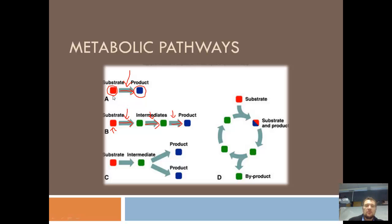Pathways can be simple linear metabolic pathways, or they can be a little bit more complicated, like a branched pathway. You start with a starting point, go to an intermediate, and one form of the enzyme is going to make one kind of product, while another form of the enzyme would make a different product.